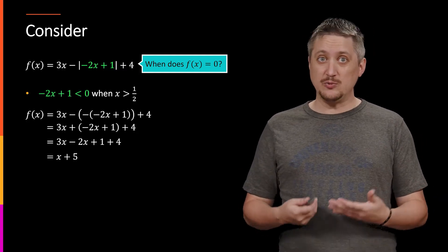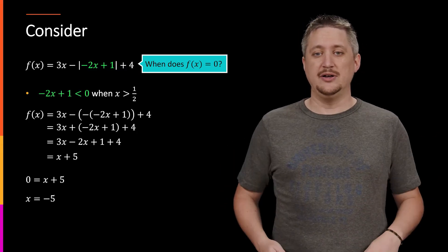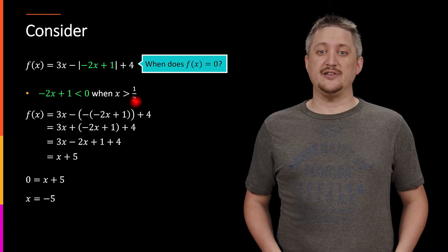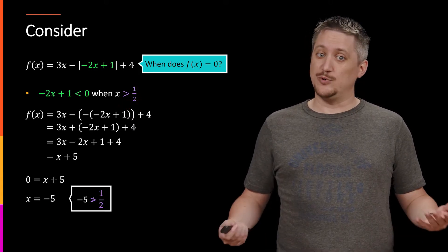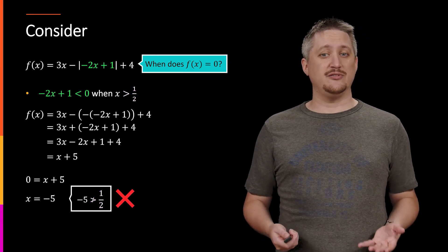Again, now that we have no absolute value, we can actually set this thing equal to zero and solve. x is -5. But again, this was under an assumption. This is only true if x is greater than 1/2 and the x we got was -5. Well, -5 is not greater than 1/2. So this is not a solution.